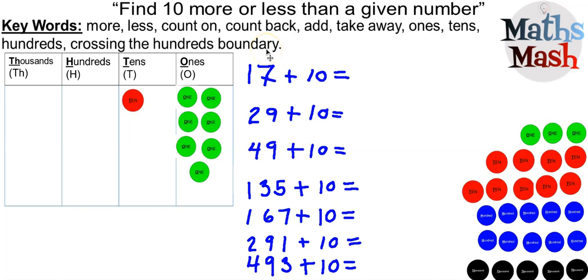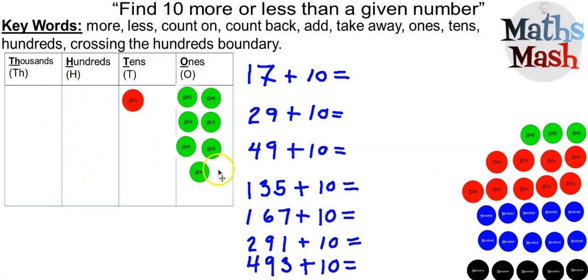You can also see that we have our place value grid here with thousands, hundreds, tens, and ones. In this video, we're going to be mainly looking at the ones column, the tens column, and a little bit at the hundreds column.